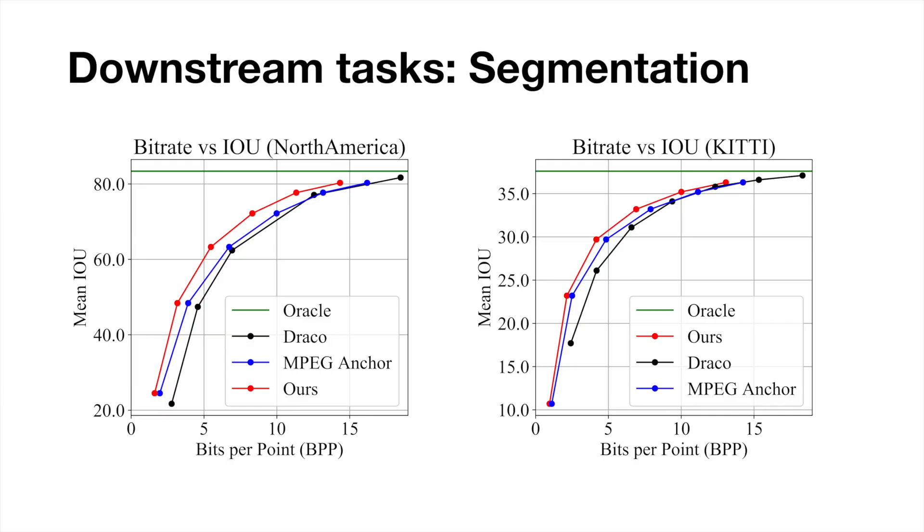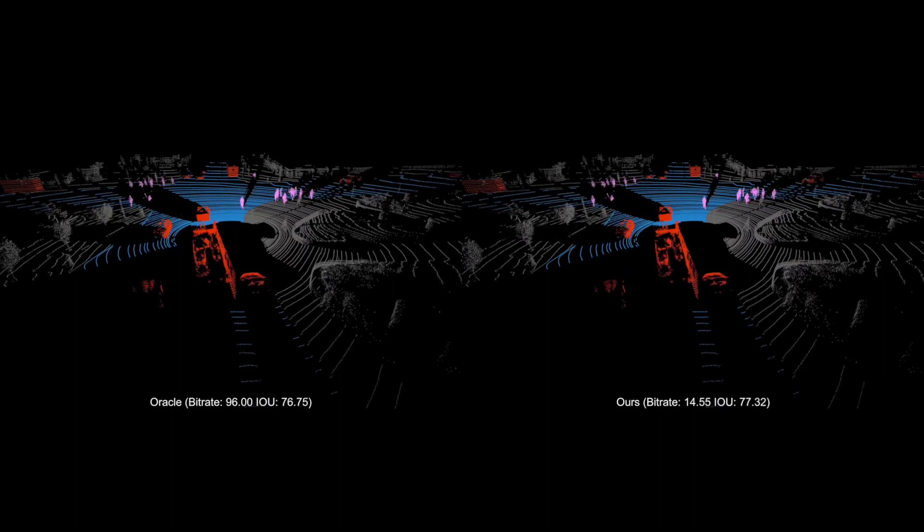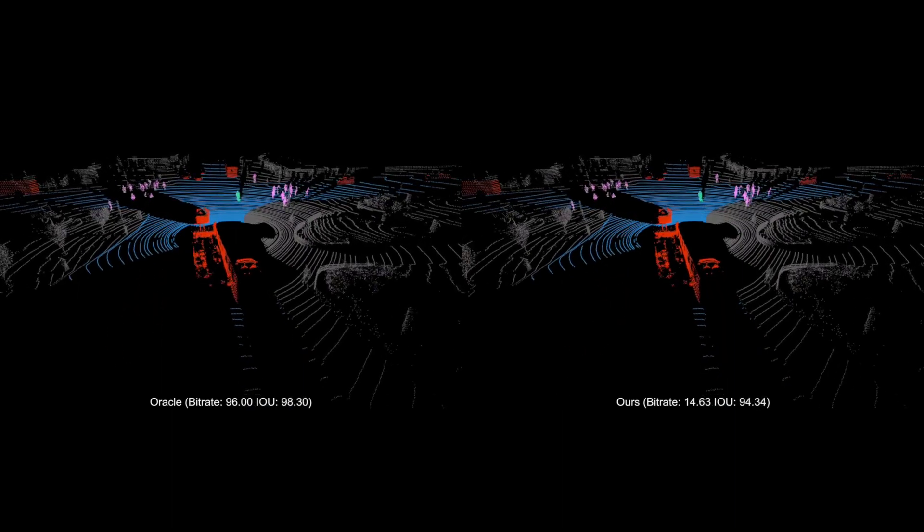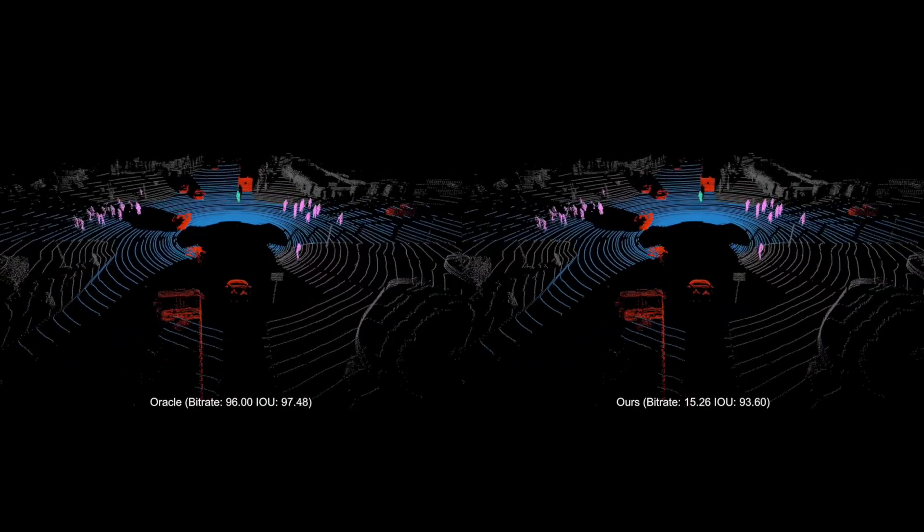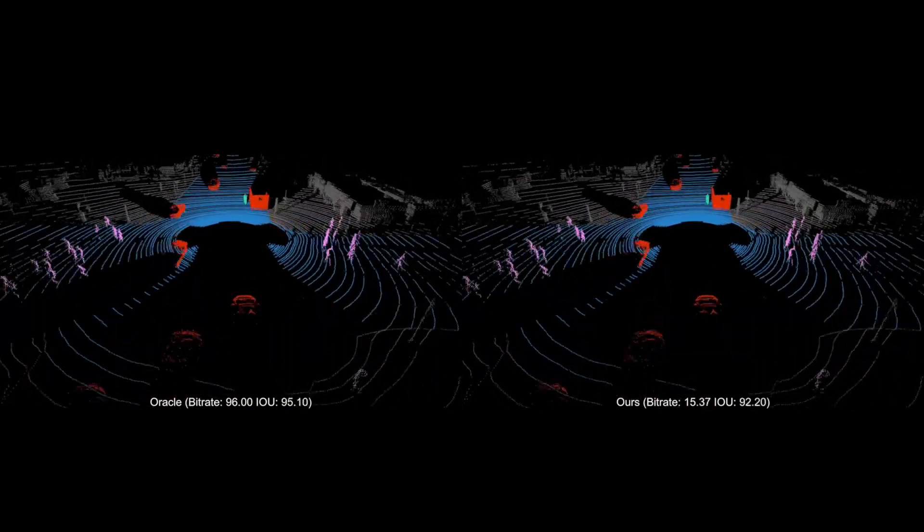Another important metric for compression is the effect on the performance of downstream tasks. Here we show mean IOU for semantic segmentation. At similar bitrates, our method outperforms all baselines. Comparing results for semantic segmentation on uncompressed point clouds and point clouds compressed using our method, the results are nearly identical.